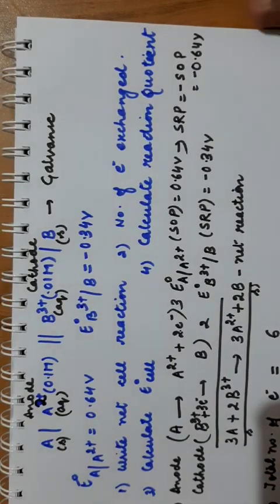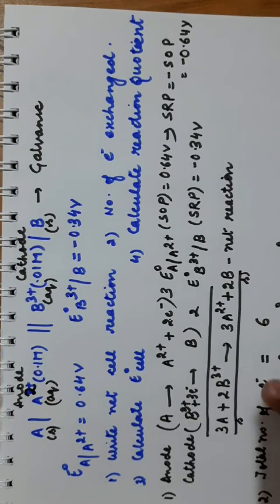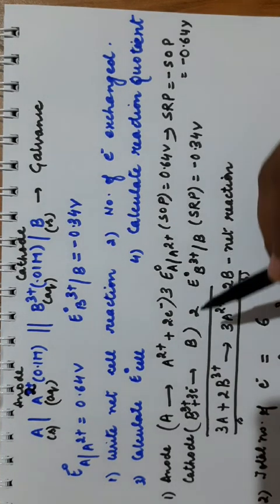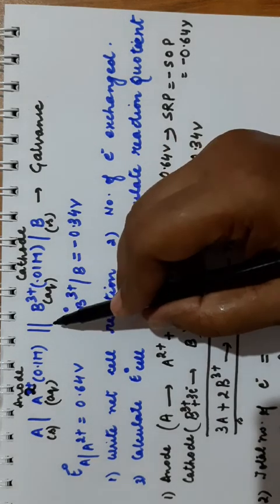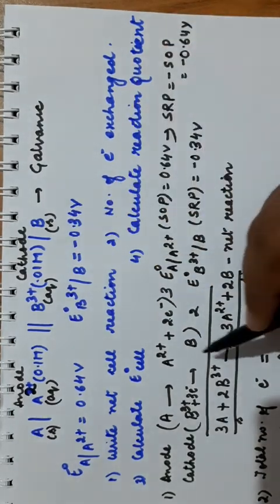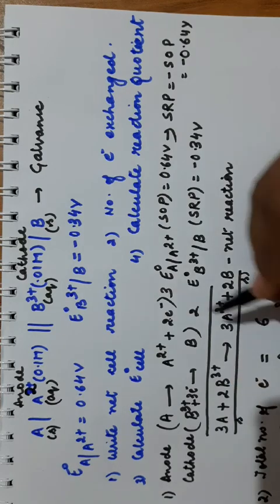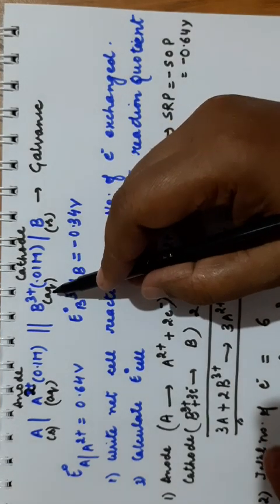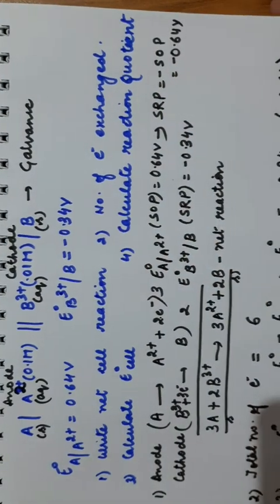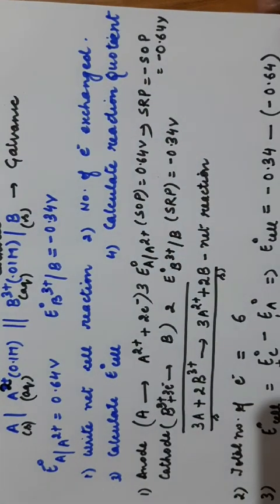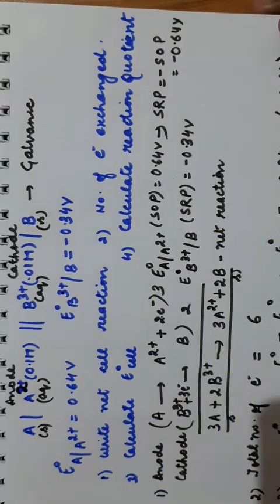In this way you can be asked to calculate E naught cell and write the net cell reaction. You must know how to write the net cell reaction from the representation given, or you will be given the reaction and asked to represent the galvanic cell. This is all about cell potential. I hope you have understood the concept of cell potential. Thank you.